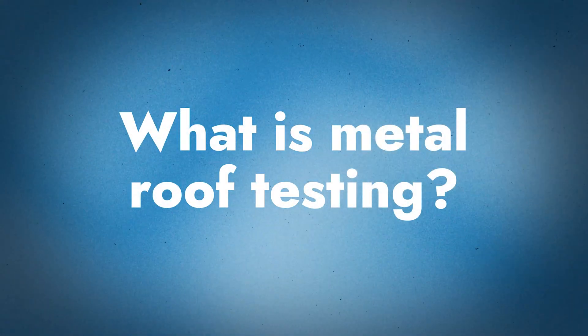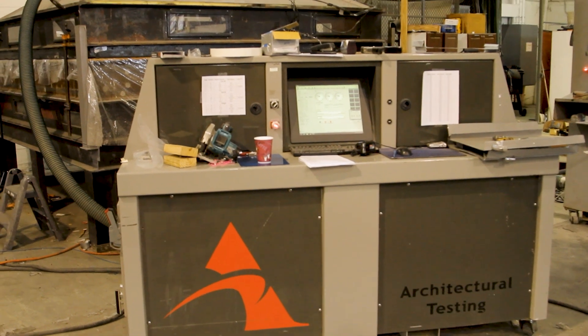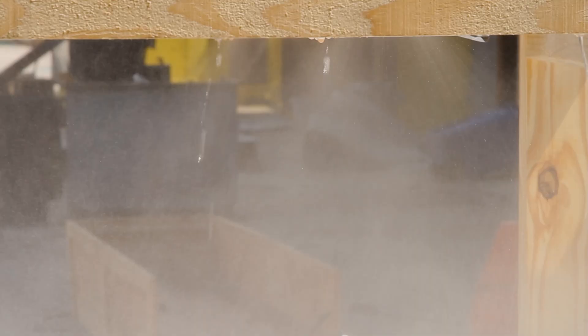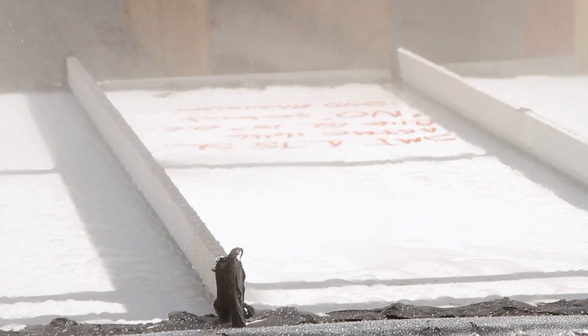So what is metal roof testing? It's literally exactly what it sounds like — a test performed on a roof panel to test for a specific requirement, whether it be uplift, air infiltration, water penetration, or water submersion. There are tests on the physical properties of the panel when it comes to materials, tests on how a panel profile performs, and tests on coatings like paint systems and galvalume coatings.